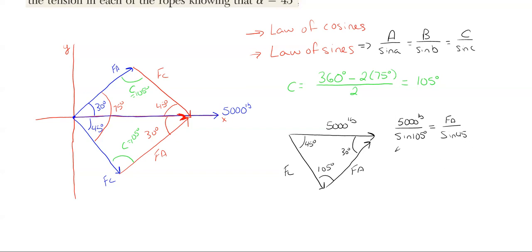So we can rearrange this and solve for Fa, which Fa is just 5,000 times the sine of 45, all divided by the sine of 105. And this gives me a total force of 3,660 pounds, and it's going in that upward right direction. So that's how much tension force is in the cable connected to Fa.